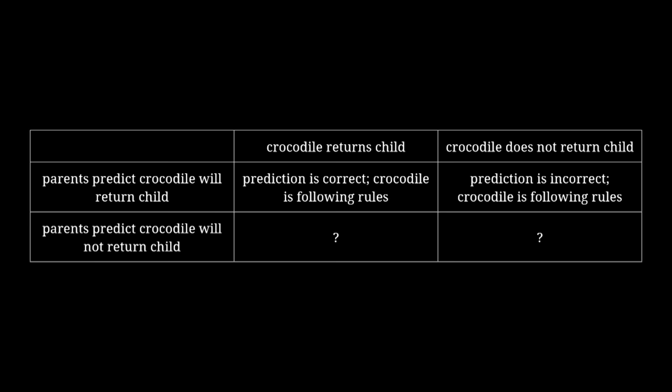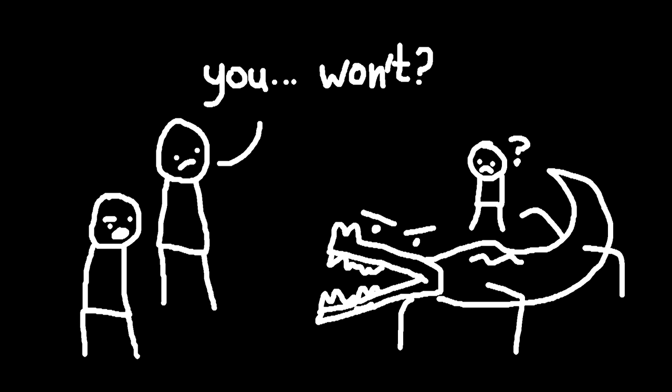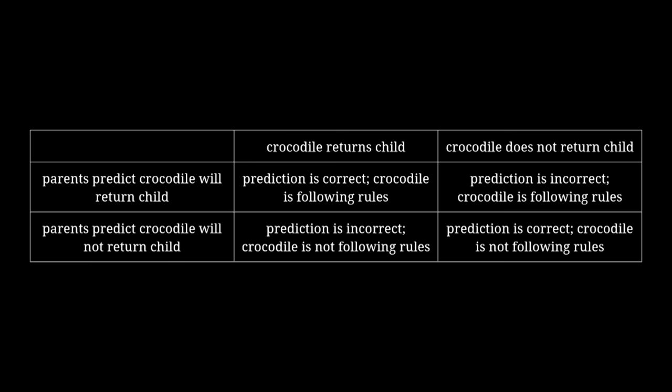But here's the tricky part. If the parents instead say 'we don't think you're giving our kid back at all,' then it's the same self-contradiction as the liar paradox. Because if the crocodile gives them their kid back, then their prediction was wrong, so the crocodile wasn't supposed to give them their kid back. But if the crocodile doesn't give them their kid back, then their prediction was right, so the crocodile should give them their kid back, as promised. No matter what, the crocodile cannot do what it said it was going to do. A paradox.